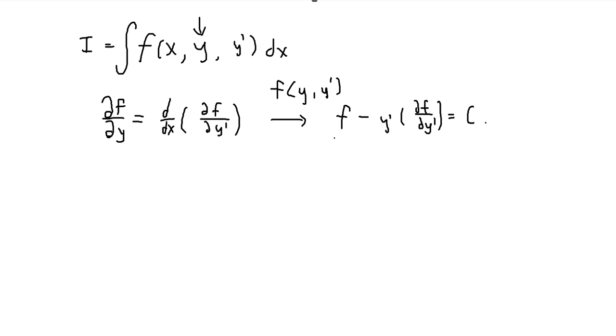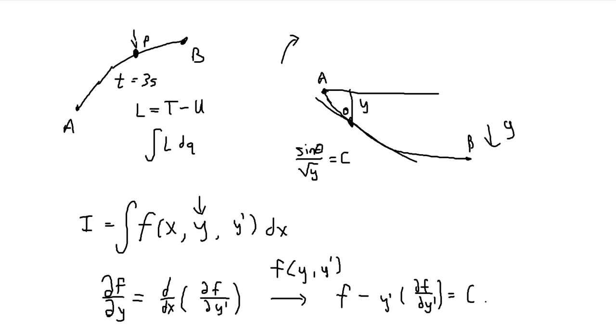So basically, you just take a partial and then clear denominators and stuff until you get something, and then I'll show that whatever we get, that we have to have this property that sin theta over square root of y is equal to c, some constant.